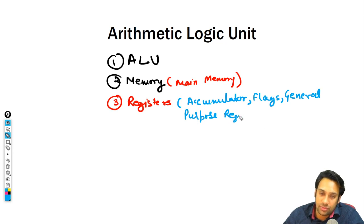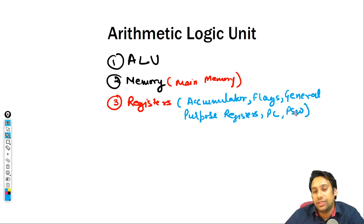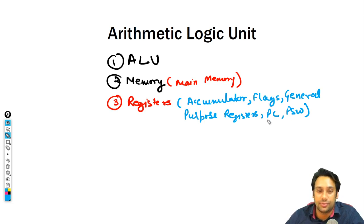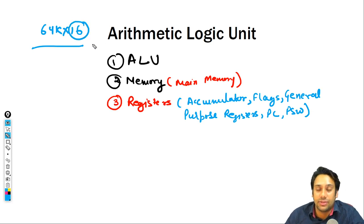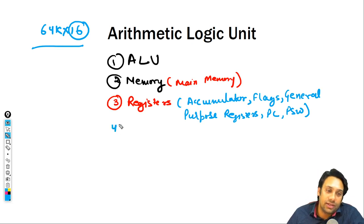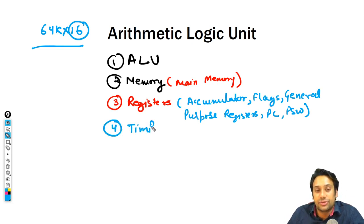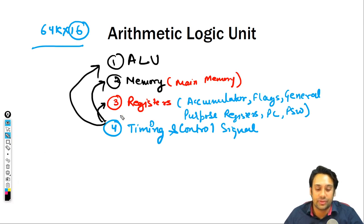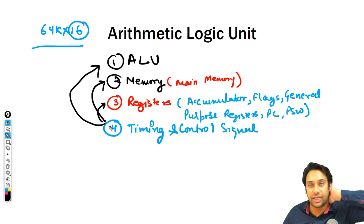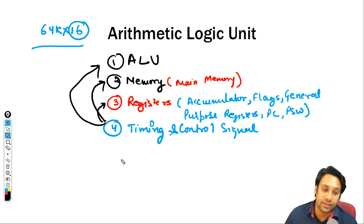Registers include an accumulator, some flags, general purpose registers that can be used for any purpose, a program counter, and a program status word — all of these are registers. These registers are made up of flip-flops connected in a specific way. For example, in a 64K×16 computer, the size of the register is 16 bits, storing 16-bit information. The fourth component needed is timing and control signals, so that we can synchronize ALU, memory, and registers with each other.